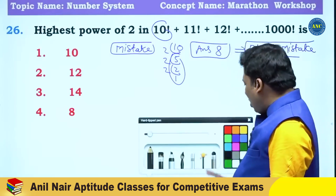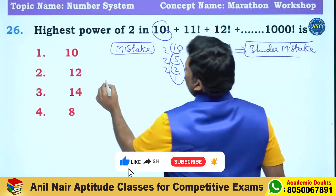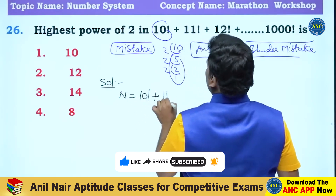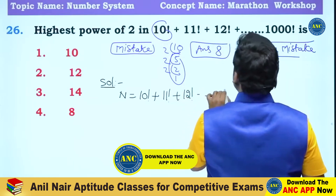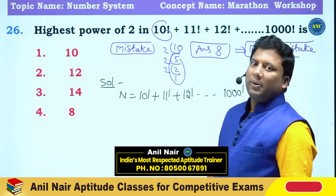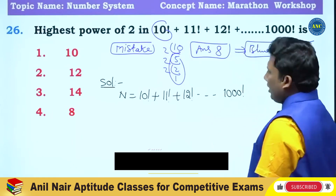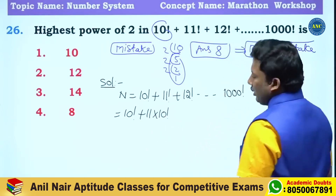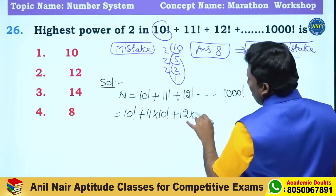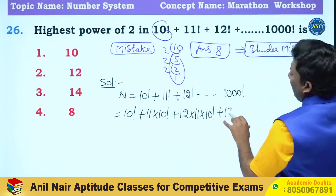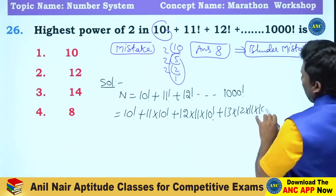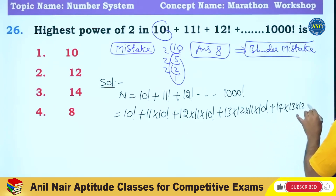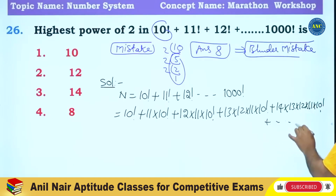Let me call the expression N. N is given as 10 factorial plus 11 factorial plus 12 factorial and so on up to 1000 factorial. Now, 11 factorial can be written as 11 into 10 factorial. 12 factorial can be written as 12 into 11 into 10 factorial. 13 factorial can be written as 13 into 12 into 11 into 10 factorial, and so on.